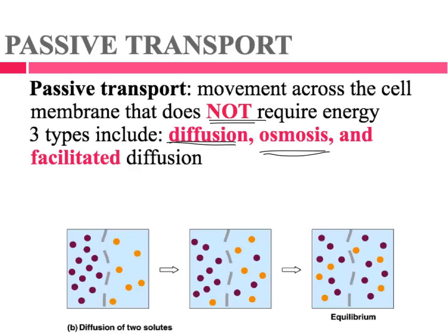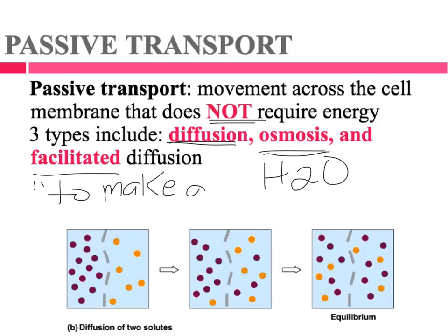Osmosis is the specific type of diffusion of water — remember, osmosis is diffusion of water. And facilitated diffusion: 'facilitate' means to make easier or to help. So facilitated diffusion is still diffusion — it has the word diffusion in it. Students usually mix this up and think it requires energy, but more on that in a little bit.